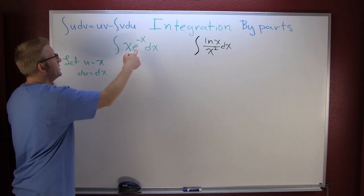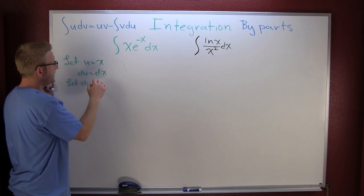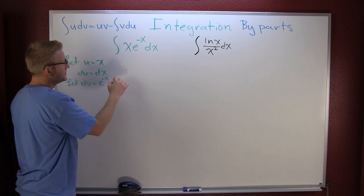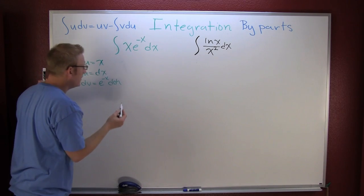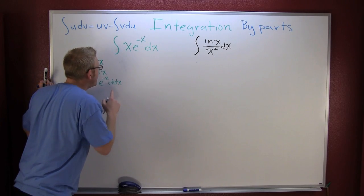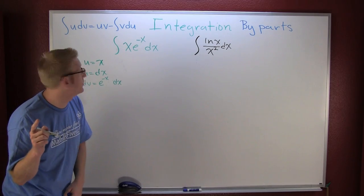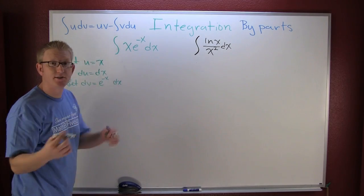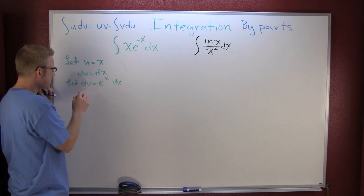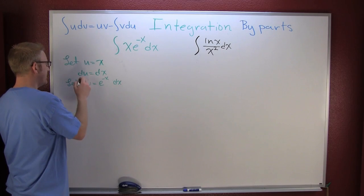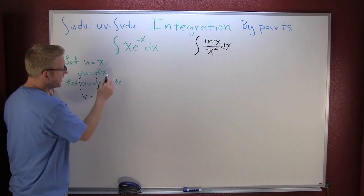I'm gonna let dv equal e to the minus x dx. Now that I've done that, I want to integrate both sides because I need to get my u piece so that I can stick it in my by parts form. So then I integrate the left side, integrate the right, I get v.